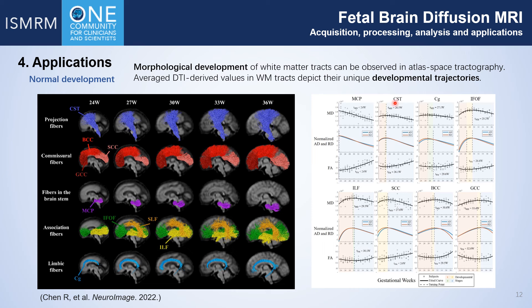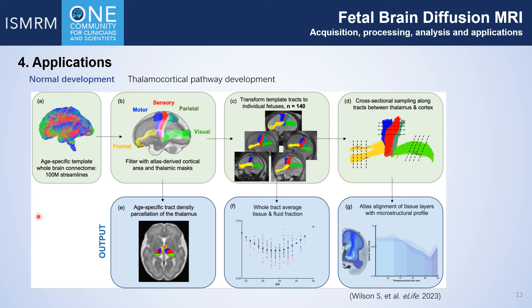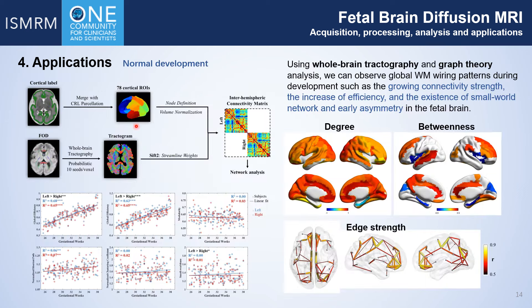Average DTI-derived values extracted from the tracts depict their unique developmental trajectories. Non-monotonic trends were observed, suggesting complex developmental phases of microstructure. A recent study also observed such non-linear trends in the thalamocortical pathways and reported several developmental stages according to the microstructure changes, which were related to the evolution of transient fetal brain tissue layers. Furthermore, using whole-brain tractography and graph theory analysis, we can observe the global wiring patterns of developing white matter, such as growing connectivity strengths, increasing network efficiency, and the existence of small-worldness and early lateralization in the fetal brain.